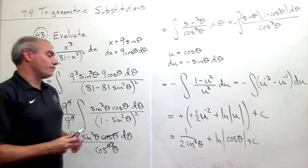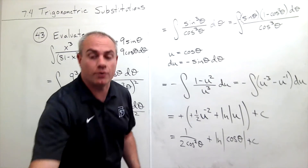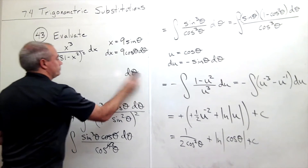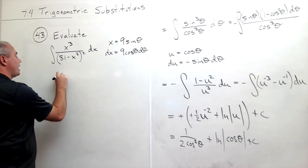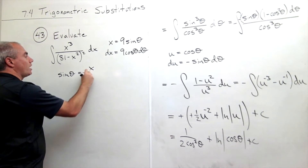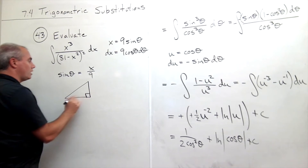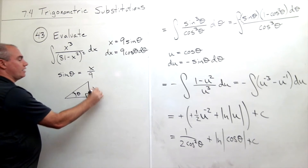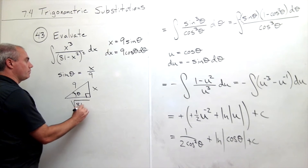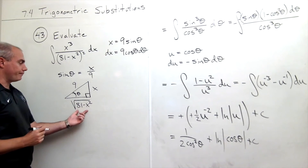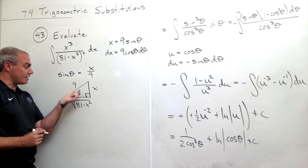Now we need to back-substitute using a reference triangle. We know sine theta equals x over 9, so with opposite side x and hypotenuse 9, the adjacent side is the square root of 81 minus x squared. Therefore cosine theta equals adjacent over hypotenuse, which is square root of 81 minus x squared over 9.